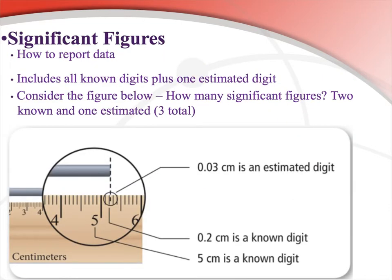When taking a measurement in chemistry and all science, it's going to include all of the known digits — the ones we're certain of — plus one estimated digit. Take a look at this little meter stick, this ruler. Consider this figure — how many significant figures are in the measurement of this particular rod or wire?